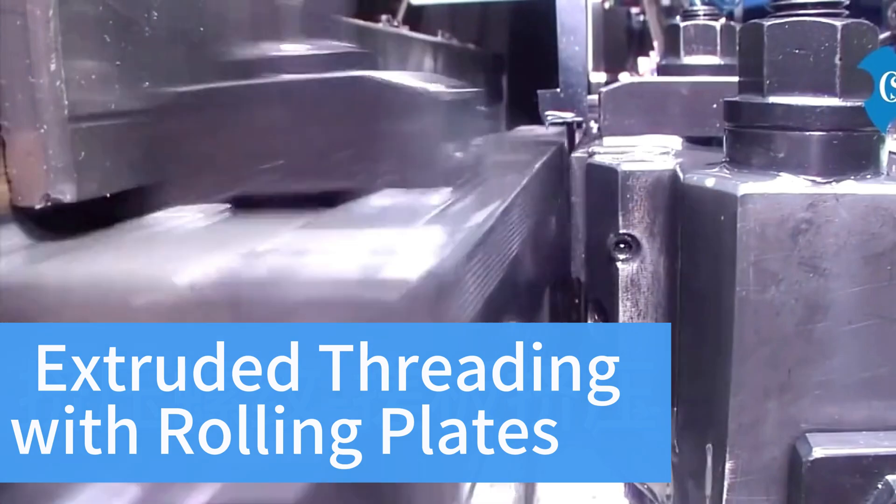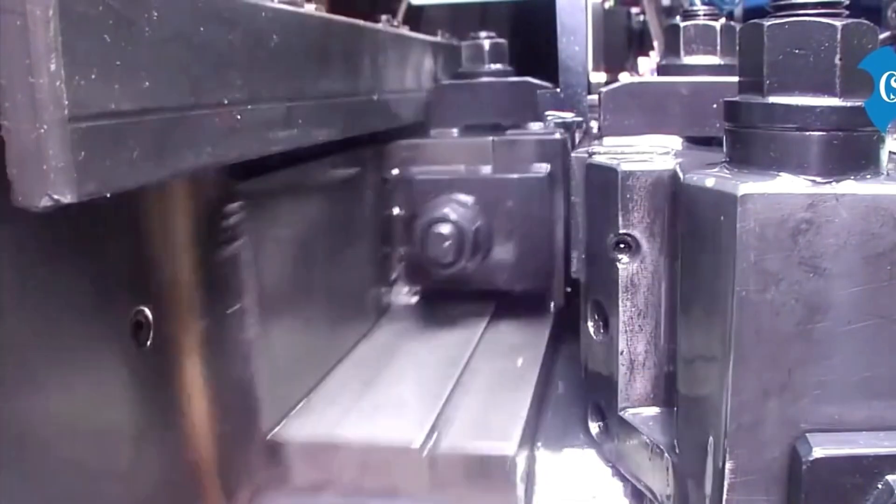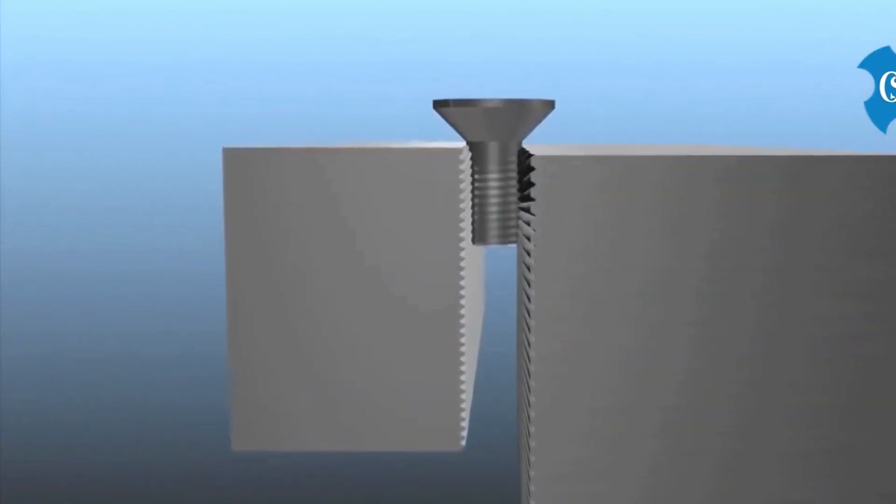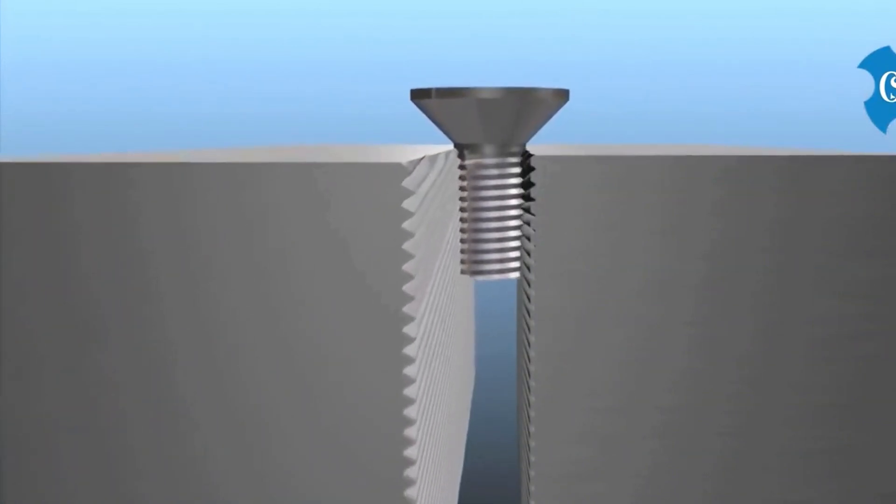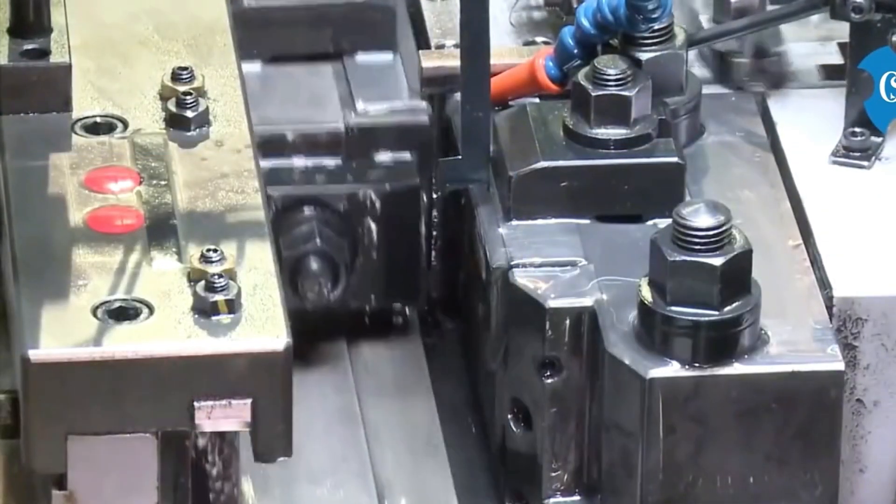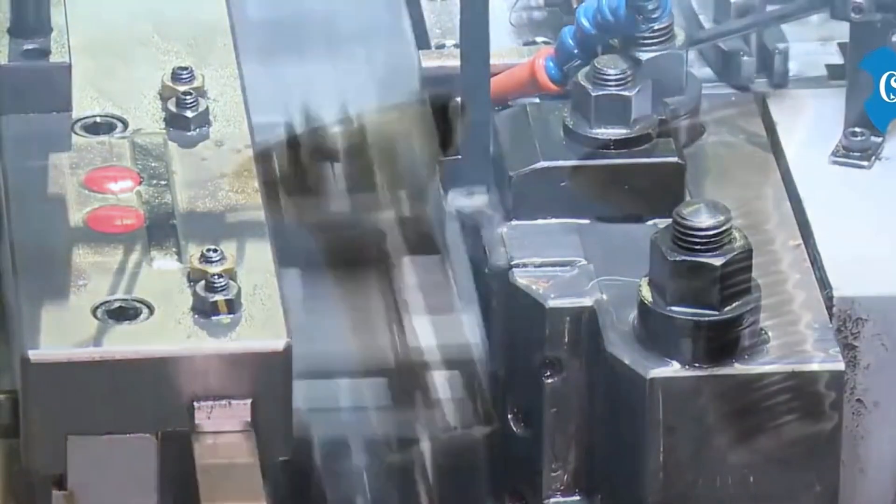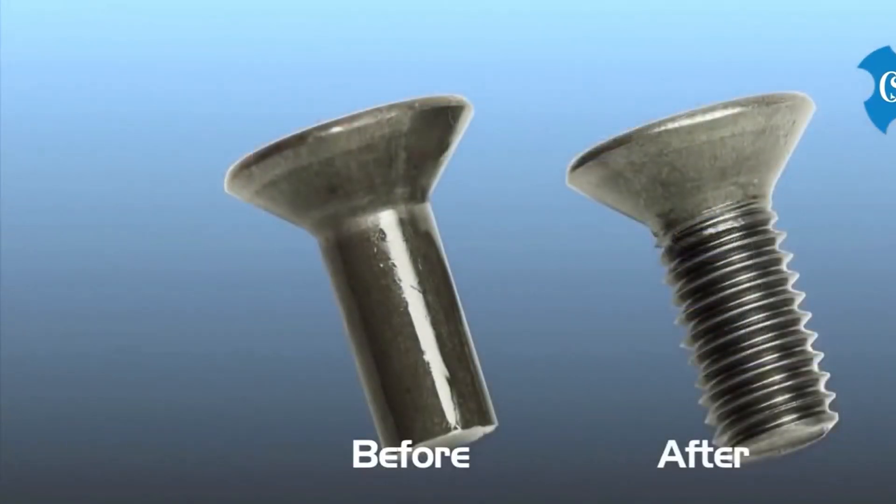Extruded threading with rolling plates. Two thread rolling plates with threaded teeth are staggered by pitch, a range opposite to each other. The stationary plate is fixed. The movable plate moves in a reciprocating straight line parallel to the static plate. When the workpiece is fed between the two plates, the movable plate advances and rolls the workpiece, causing its surface to deform plastically and become threaded.